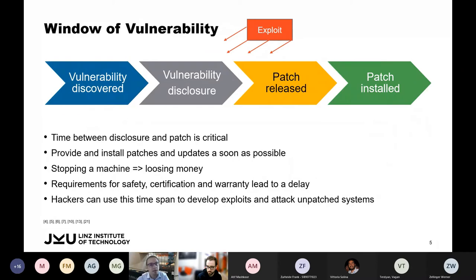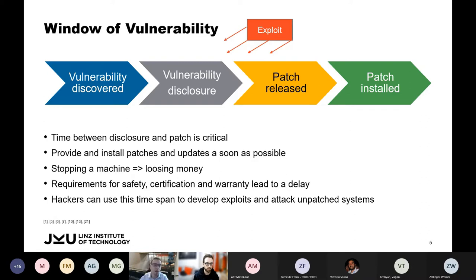The time span between when a vulnerability becomes known and when the patch to fix it is available and installed is critical. Since availability is one of the top goals of an industrial automation and control system, simply stopping a machine is the worst-case scenario — it typically means losing money. You may also need a safe way to free people and objects from the system during and after an attack. Developing updates and patches takes a comparably long time due to safety certification and warranty requirements, and patches must be tested extensively.